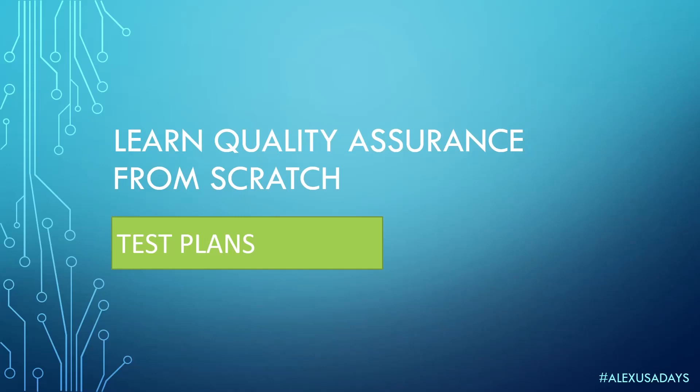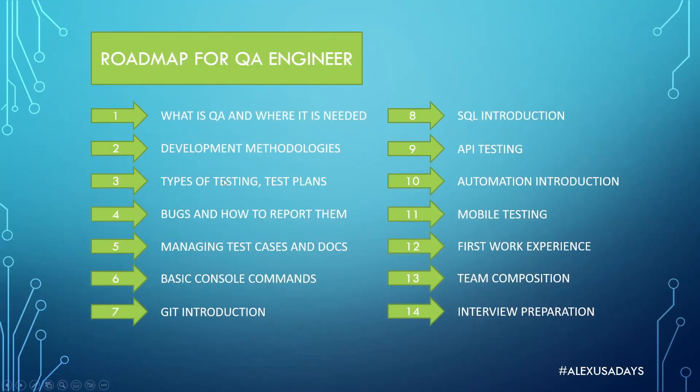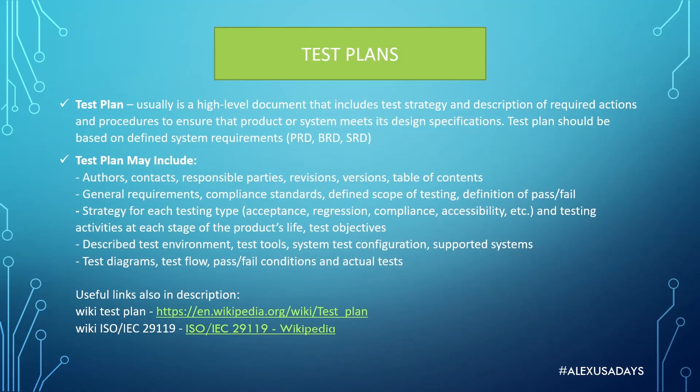Hey everyone, this is Alex. We're continuing to learn quality assurance from scratch. Today we're going to talk about test plans. We are in module 3 — we covered types of testing, and today we're covering test plans. That's going to be the final video for this third section, and then we'll move into section 4 on bugs and how to report them.